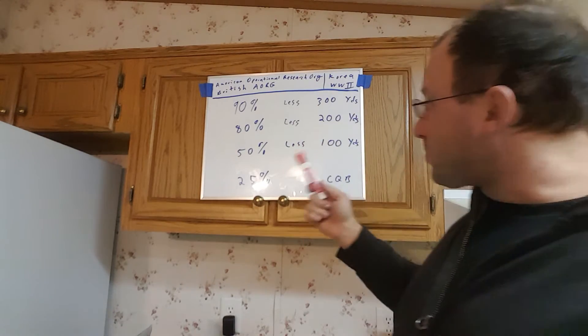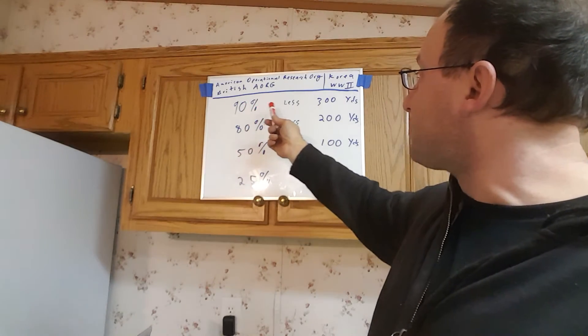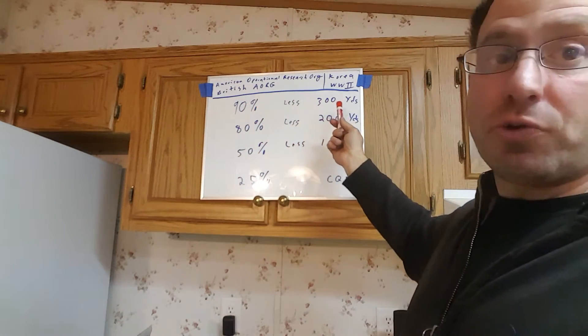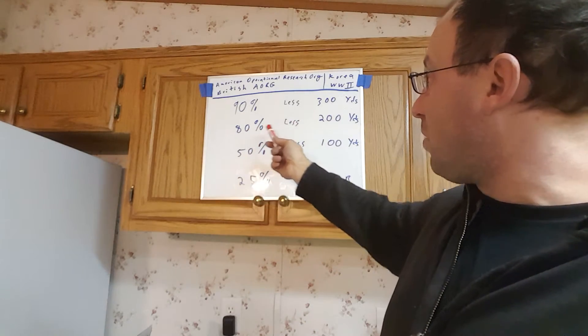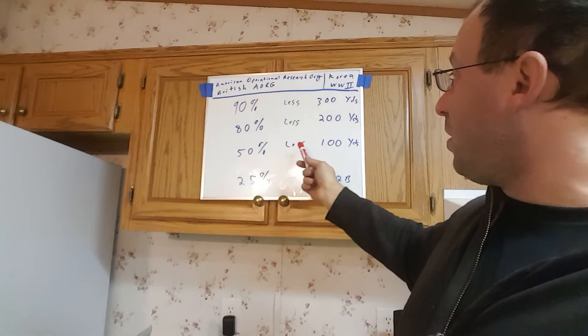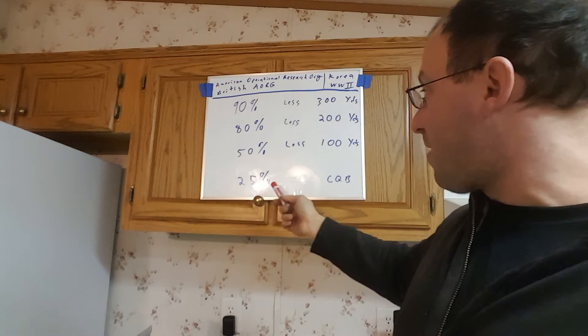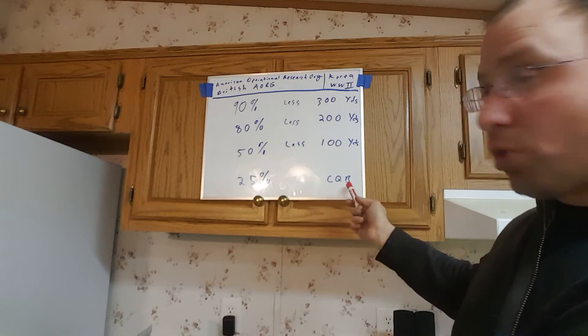So what they found was that 90% of engagements happened at less than 300 yards. 80% of engagements happened at less than 200 yards. 50% of engagements happened at less than 100 yards and 25% of engagements were close quarter combat.